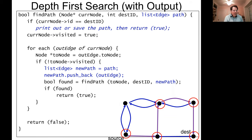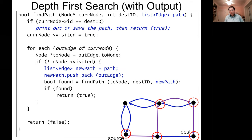We were talking about search algorithms for milestone three. We started with one that is useful in general for graphs, though it's not the best for milestone three, and that was depth-first search. We went through how we developed the code — it's recursive, related to what you did in a binary search tree, but a little different. You need this visited flag.